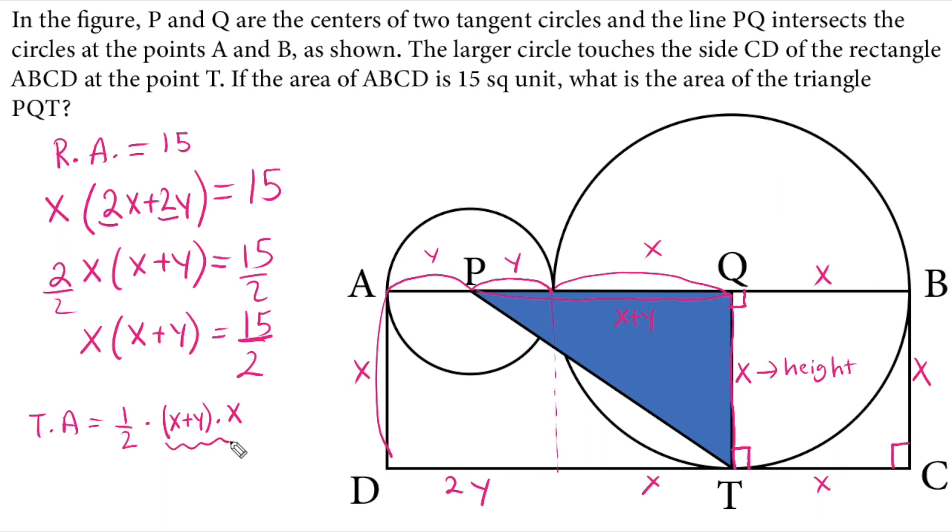We know this expression from somewhere. We just found it in the rectangle area. If you plug that in to this value, we will rewrite the triangle area as one half times 15 over 2. So the area of the triangle will be 15 over 4 square units, and this is our solution.